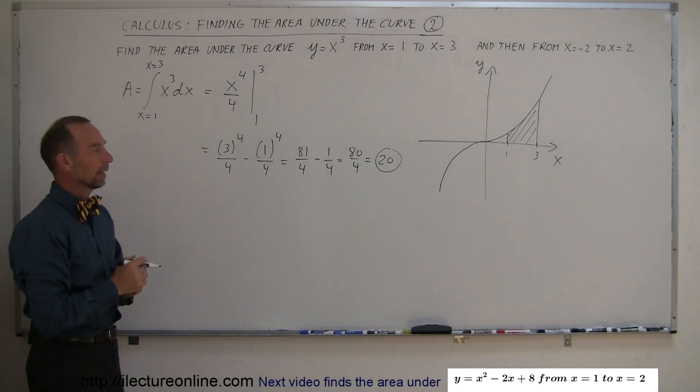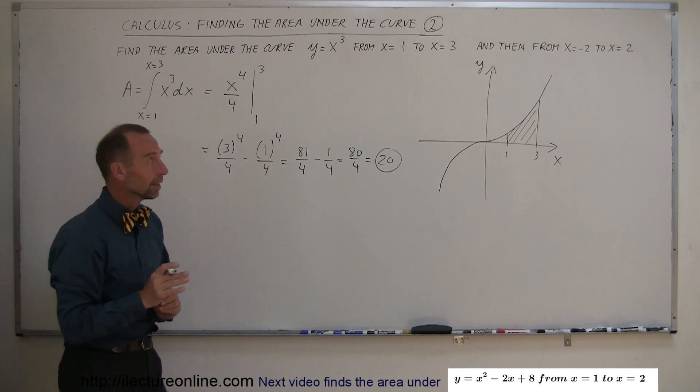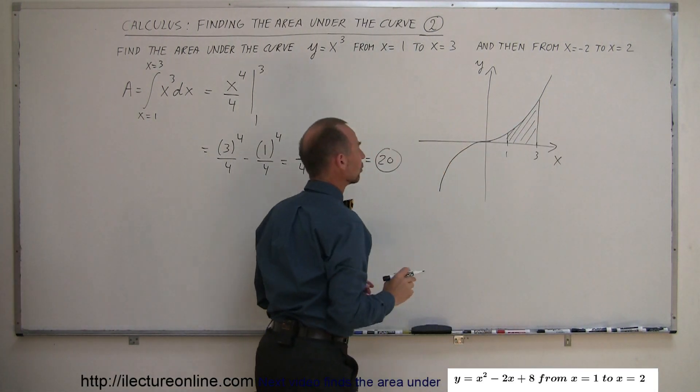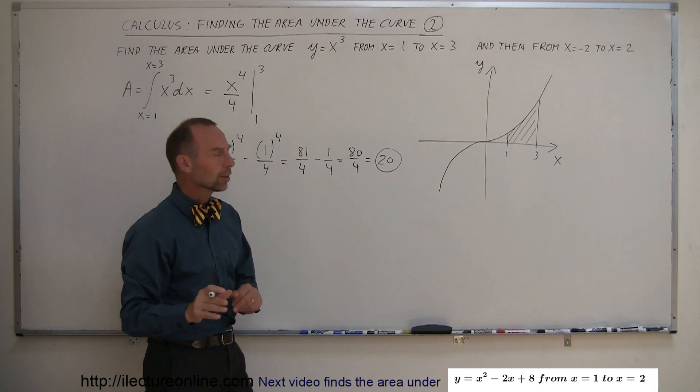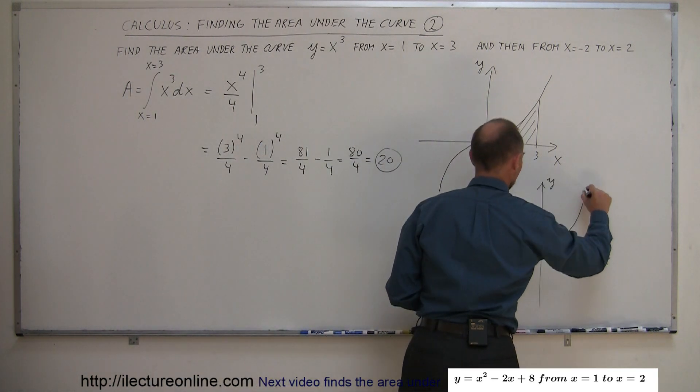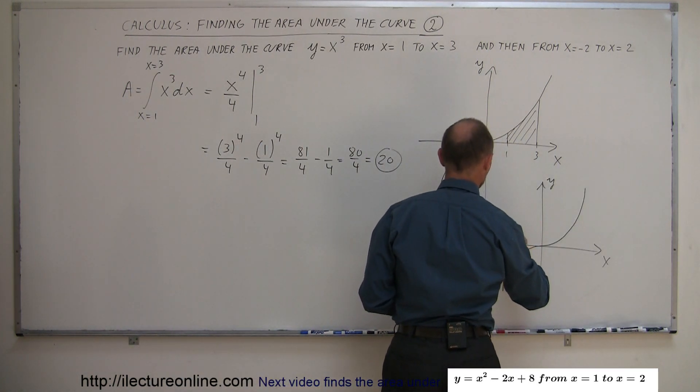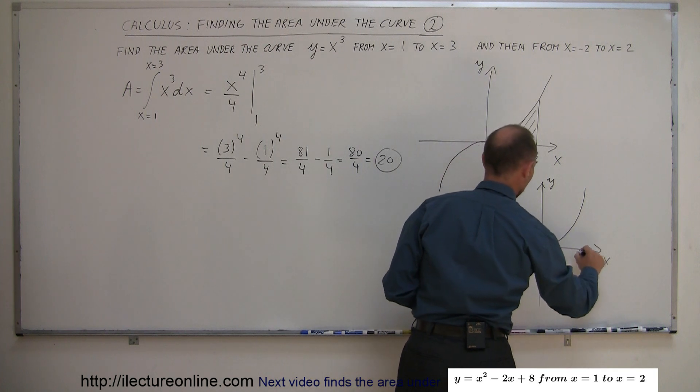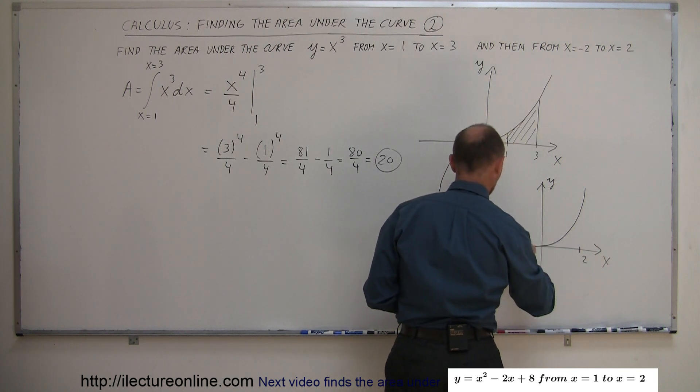Now for the second part of the problem we're going to set the limits from x equals minus 2 to x equals 2. So let's redraw the graph again over here. The limits are going to be set from x equals minus 2 to x equals 2.